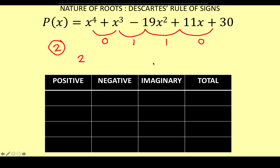The even integers are 2, 4, 6, and so on. So if I subtract 2 by 2, I get 0 — meaning I can also have 0 positive real roots. Subtracting 2 minus 4 gives a negative number, so we ignore that. Therefore, we expect either 2 positive real roots or 0 positive real roots. Let's organize the number of positive, negative, and imaginary roots in a table. Since the degree of the polynomial is four, using the corollary to the fundamental theorem of algebra, we expect a total of four roots.